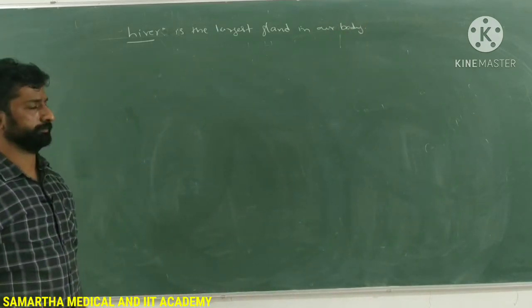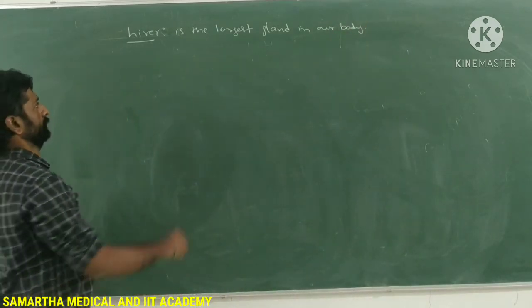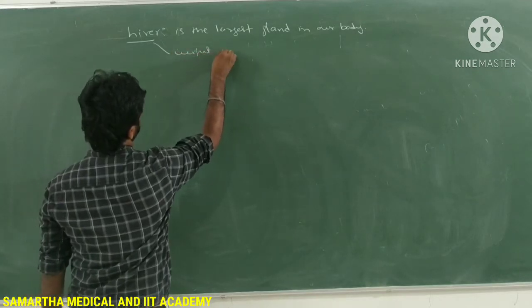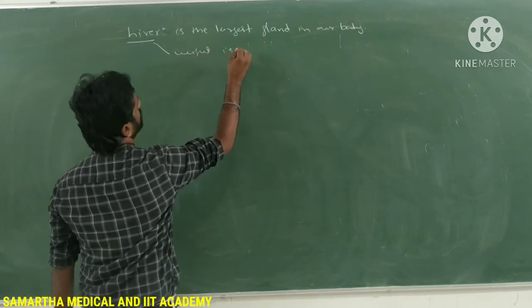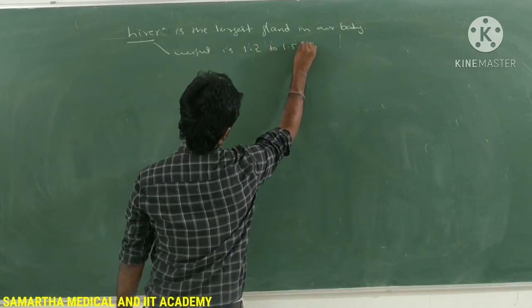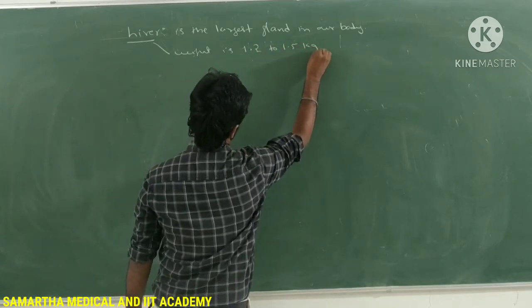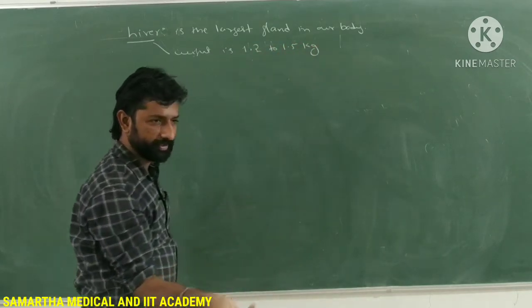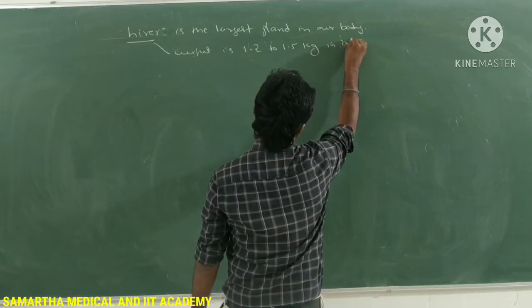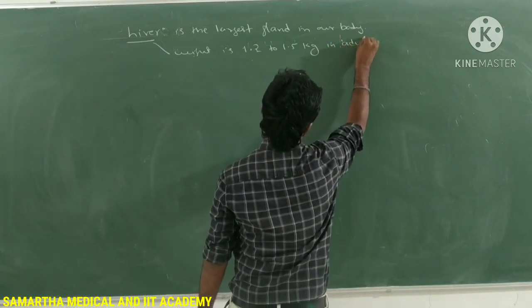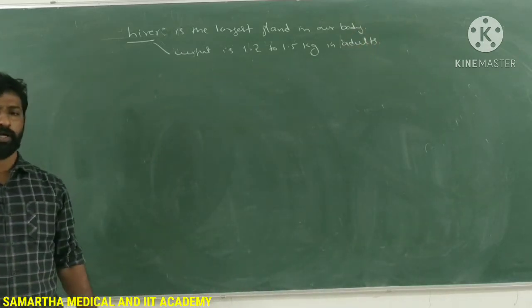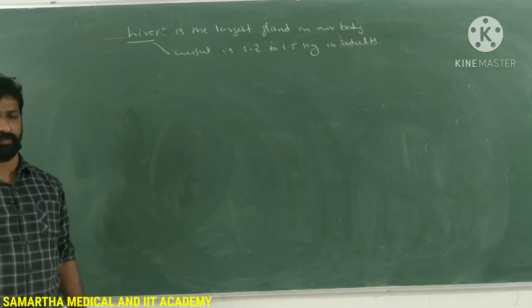Since liver is the largest gland, what will be its weight? Its weight is exactly 1.2 to 1.5 kg — in adults only.